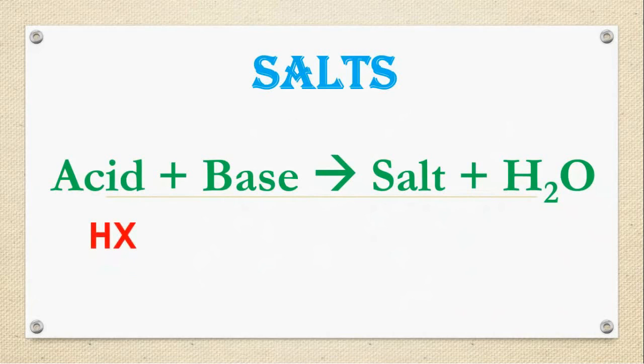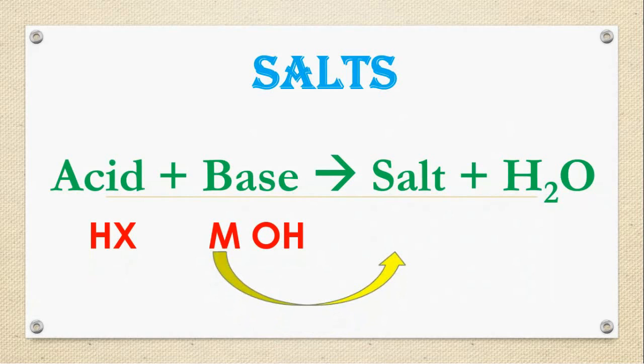And do you remember the general formula of acid and base? Yes. For acid, it is HX. H stands for hydrogen, X is compound. Base, MOH. M stands for metal, OH stands for hydroxide. Now how salt is produced? It is quite simple. From base, metal will displace.